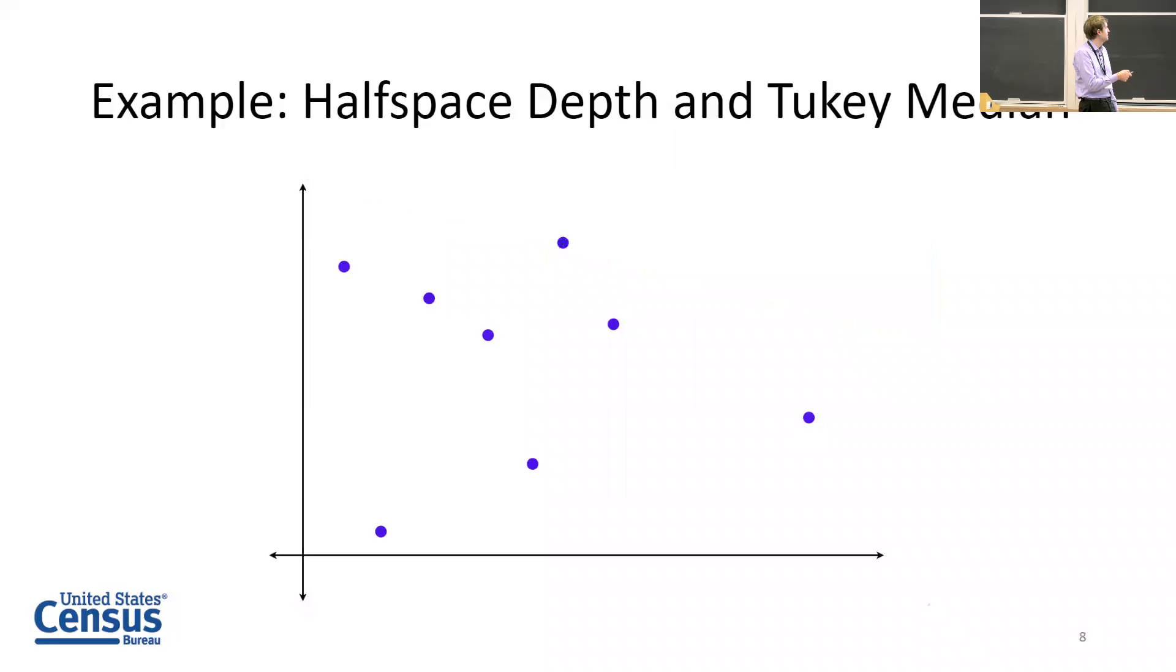We can go further and plot the set of points with halfspace depth greater than or equal to one. That is this set here. This is known as a depth contour. We can also plot all the depth contours.